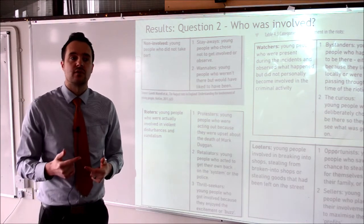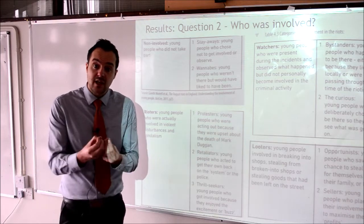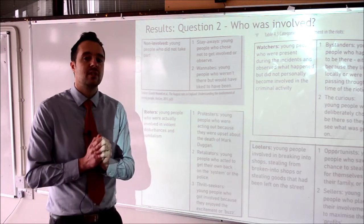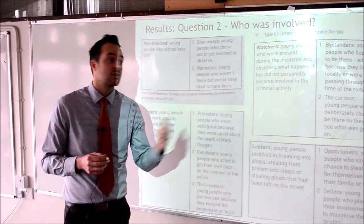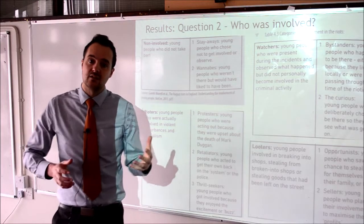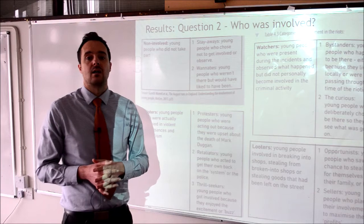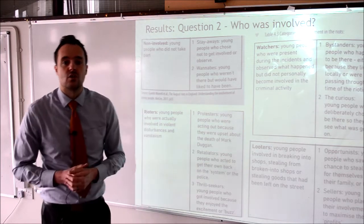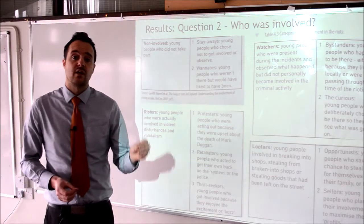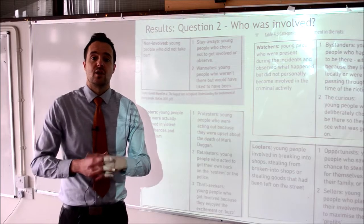Then there were wannabes — people who were not involved but actually wanted to be. They were looking on with interest thinking they wished they were there. Moving up in involvement, there were watchers — people not watching on the media but physically there. Two different categories: bystanders, who just happened to be passing by, lived or worked in the area and were simply there without getting involved. And then the curious, who knew what was going on and chose to go and observe — they left their homes and walked or drove to check it out. A lot of the footage you'll find online was filmed by this group.